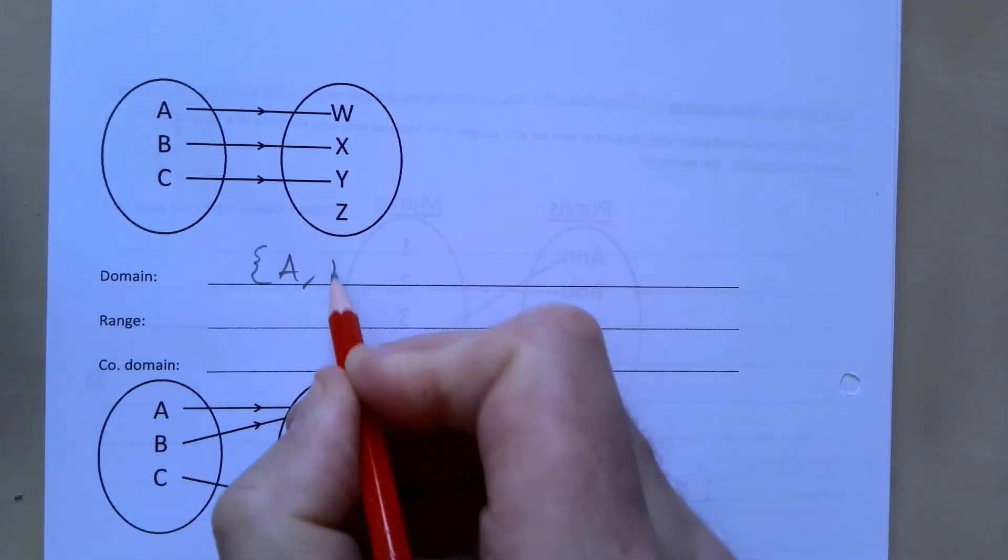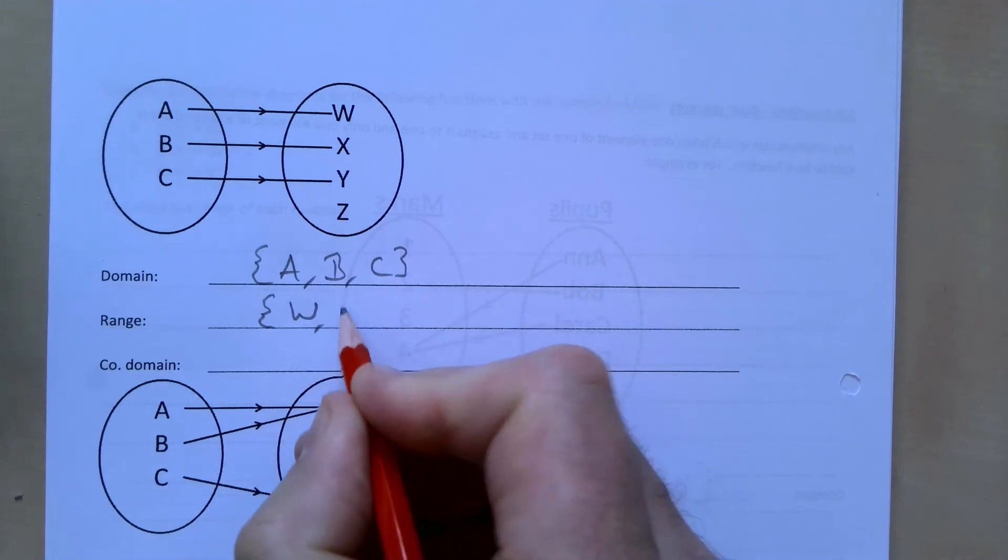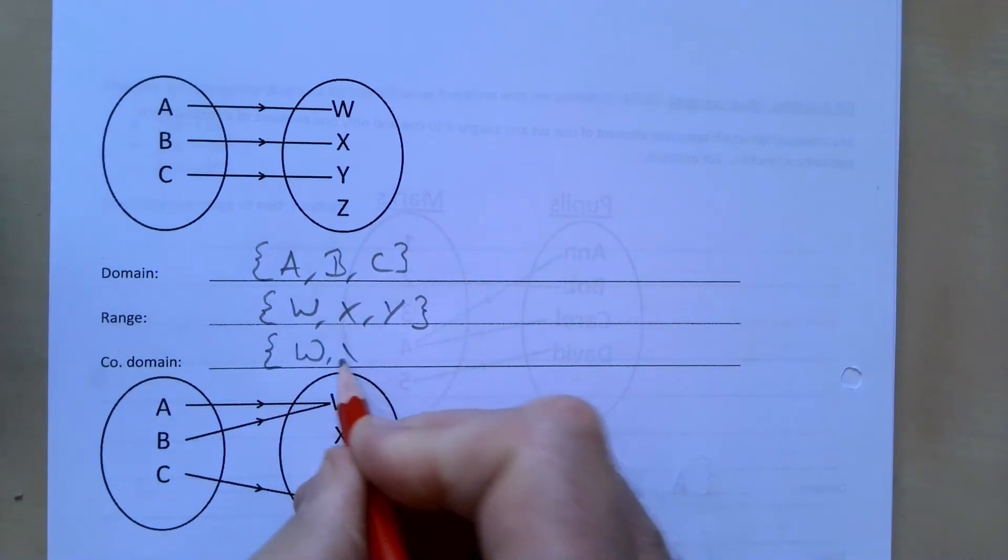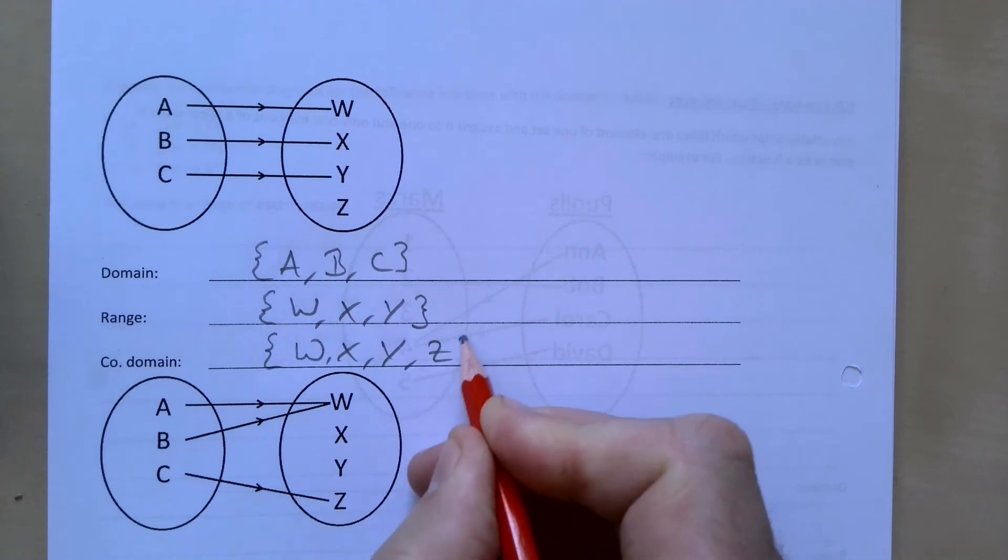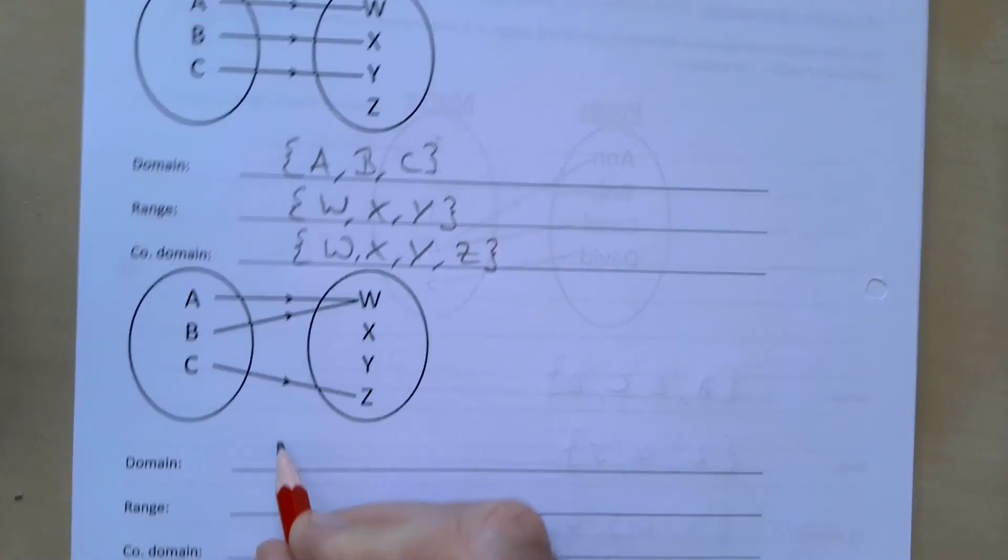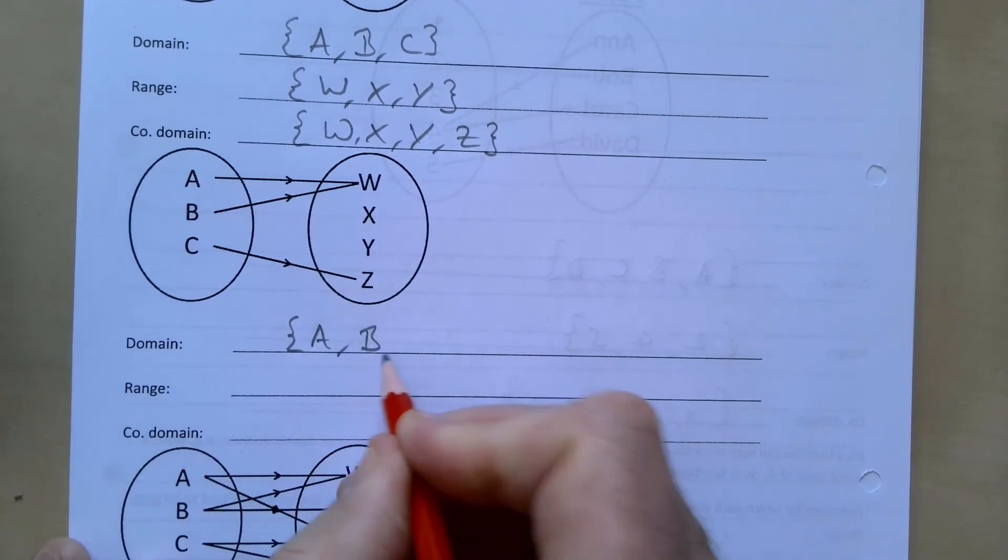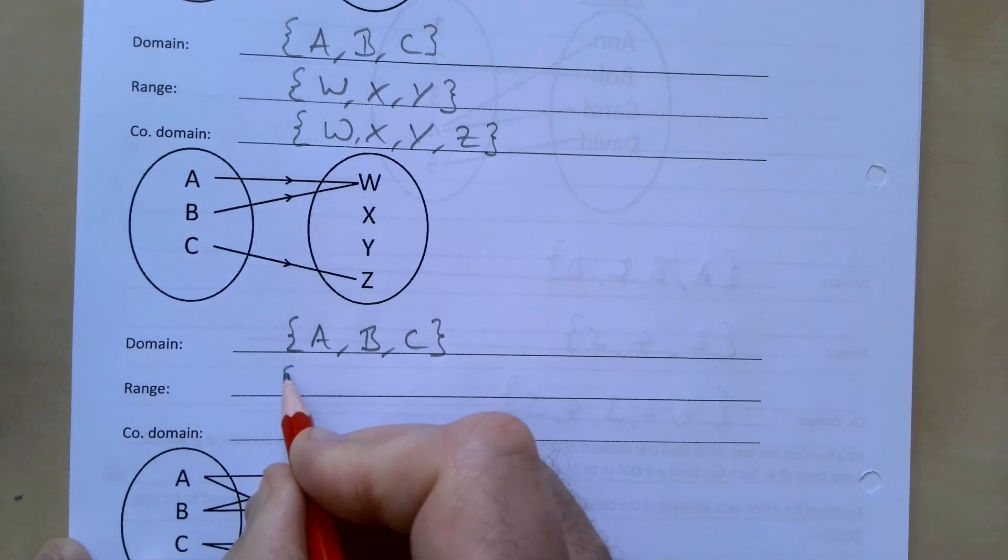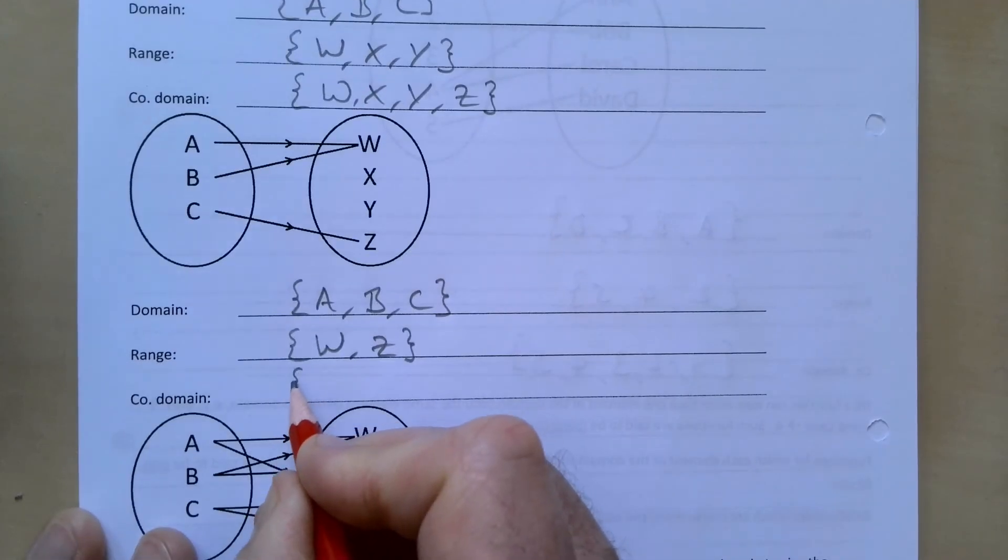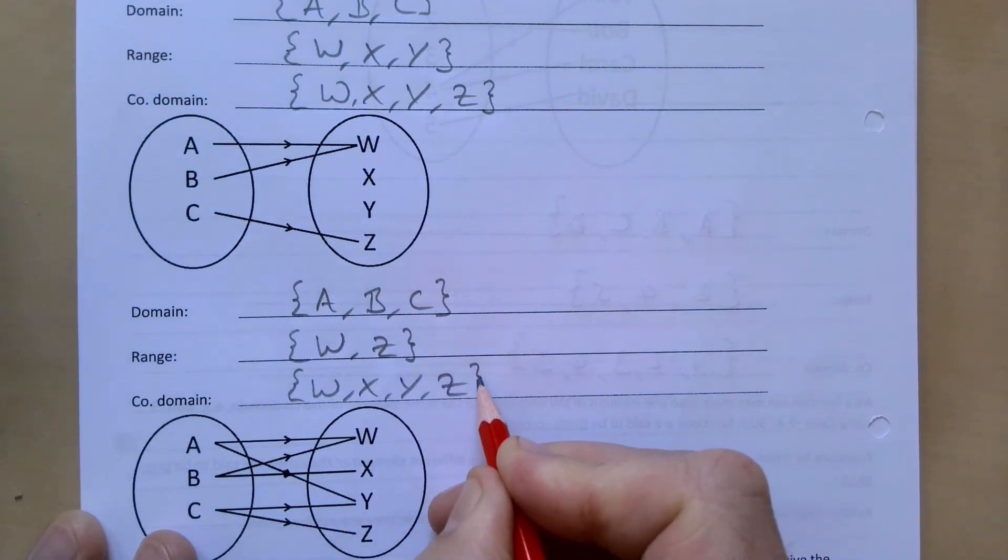Our range is W, X, and Y, and our co-domain is W, X, Y, and Z.